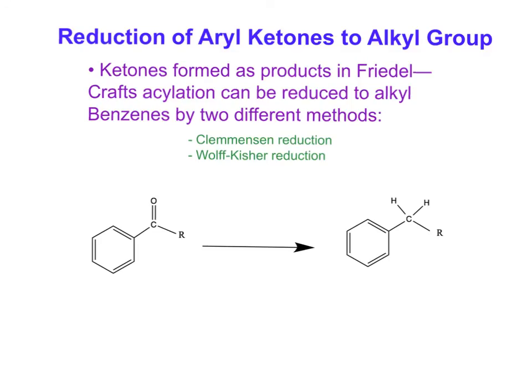Ketones formed as products in Friedel-Crafts acylation can be reduced to alkylbenzenes by two different methods: the Clemmensen reduction and the Wolff-Kishner reduction. Over here we have the general reaction and this end product is the alkylbenzene. Essentially what happens during these reductions is that the C=O bonds are replaced by C-H bonds.